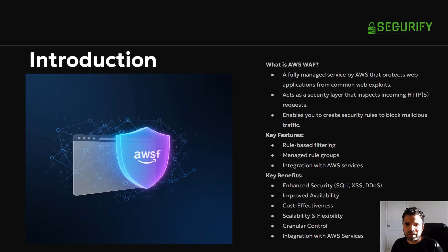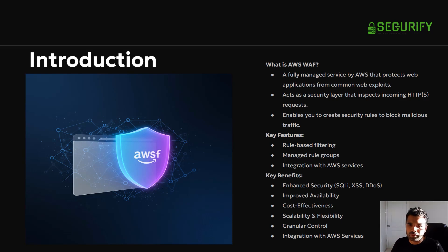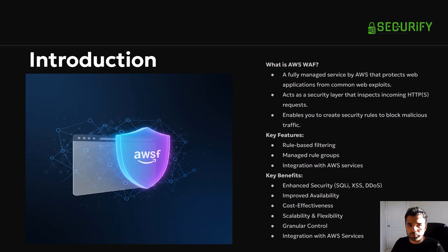So what is AWS WAF? Forgetting the AWS part, the application firewall is offered by pretty much all cloud providers — CloudFront and many others. It's a firewall built for the application to protect against common web exploits like SQL injection, cross-site scripting, malicious requests, input violations, and more. It acts as an additional security layer that inspects all incoming requests and allows you to create security rules to block malicious traffic.